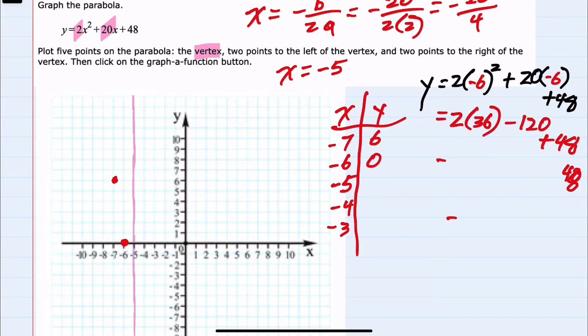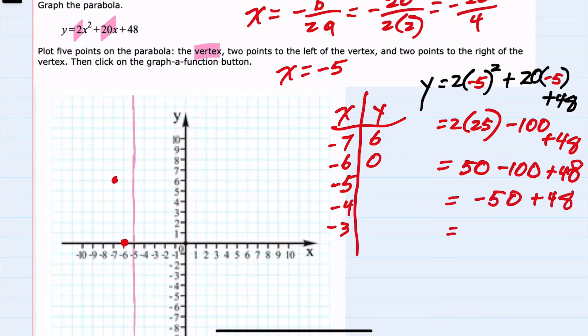Next, we will substitute negative 5. This would be 2 times negative 5 squared is 25, 20 times negative 5 is negative 100 plus 48. This would be 50 minus 100 plus 48. Negative 50 plus 48 would give us negative 2. So we have our third point.